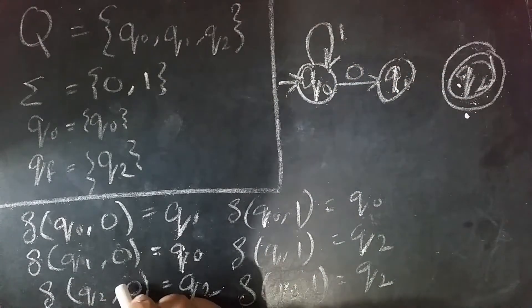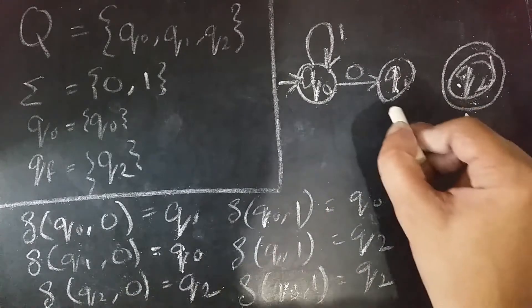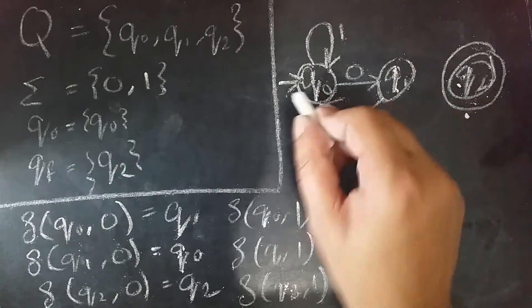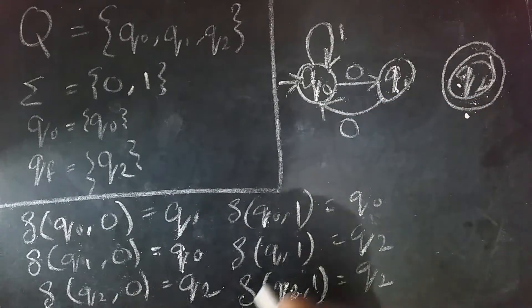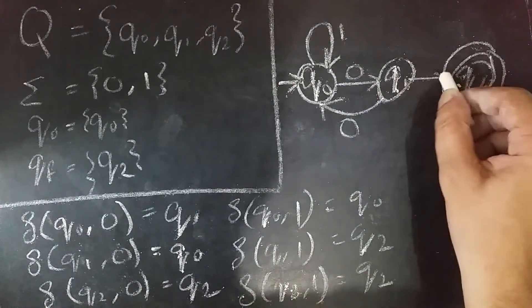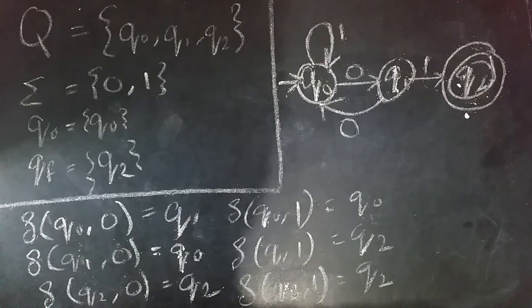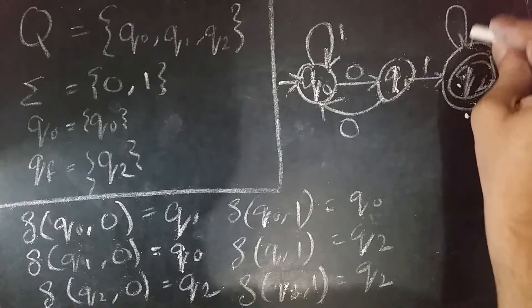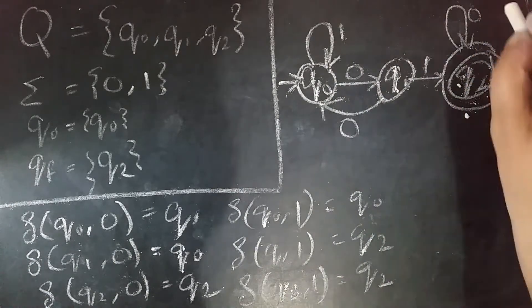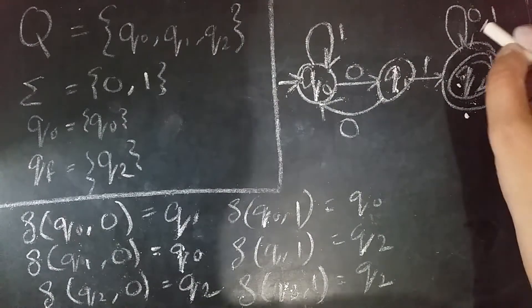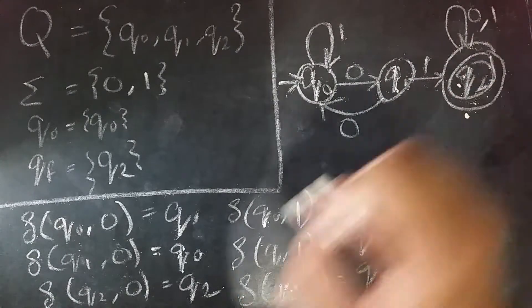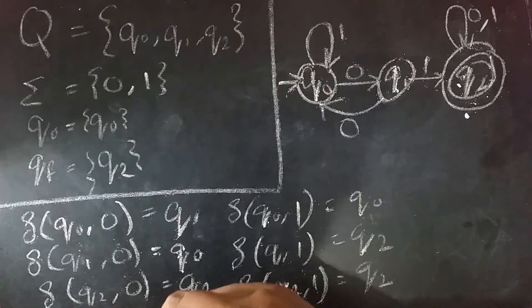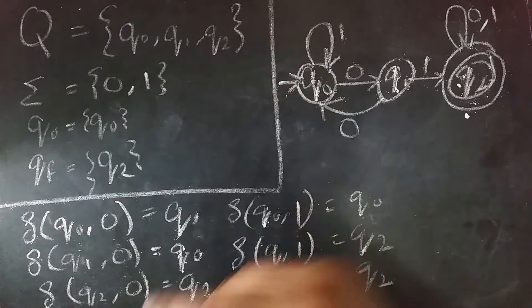On Q1, if the input is 0, go to Q0, which means we return back to Q0. If the input is 1, then go to Q2. On Q2, if the input is 0, remain on Q2, and if the input is 1, then also remain on Q2 — all transitions are self-loops. This is the second way to represent a finite automata, using a transition diagram, also known as a state diagram.